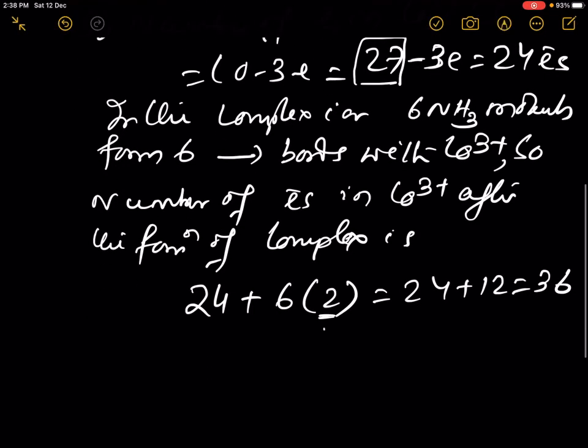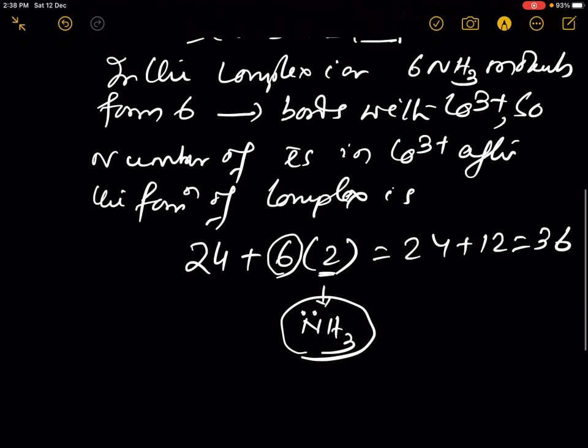These 2 electrons are from each ammonia ligand, and there are 6 ligands. So, 24 plus 12 equals 36.